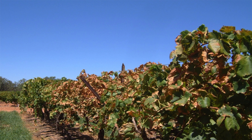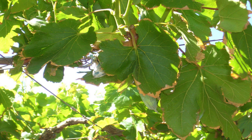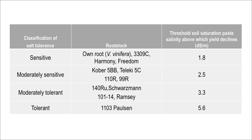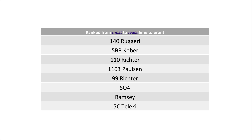Let's compare the adaptability of rootstocks to different environmental conditions. First, let's compare the tolerance to salinity. 1103 Paulsen, Ramsey and 101-14 are much more salt tolerant than ungrafted vines and rootstocks such as 3309C, Harmony and Freedom. In terms of lime tolerance, rootstocks such as 140 Ruggeri and 5BB Kober are much more lime tolerant than Ramsey and 5C Teleki.